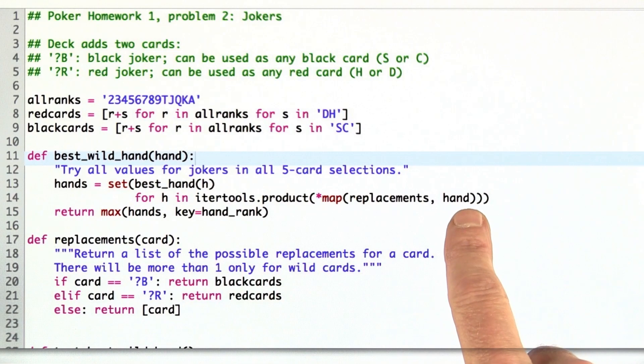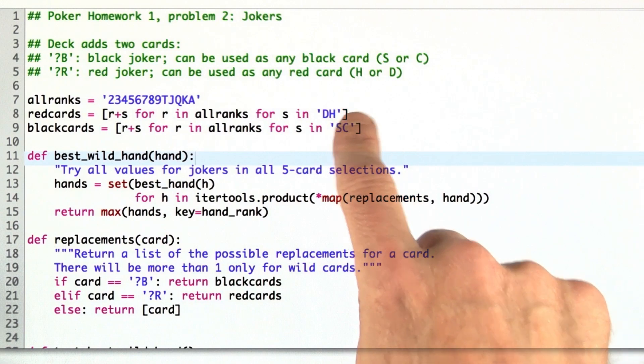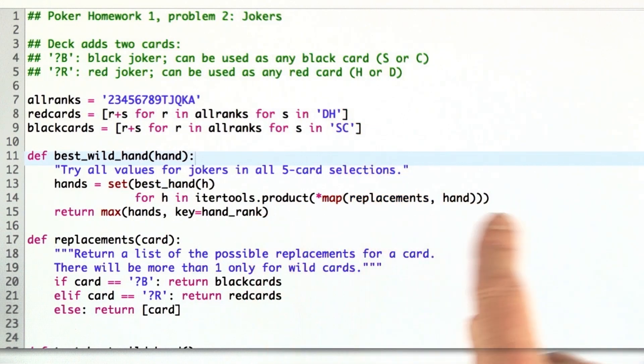What we've done here is we've called replacement on each card in the hand, and that gives us a list of possibilities for each of the cards. If the card's not a joker, that list will be 1. If the card is a joker, then it will be all the red cards or all the black cards. Now we have the product of that.